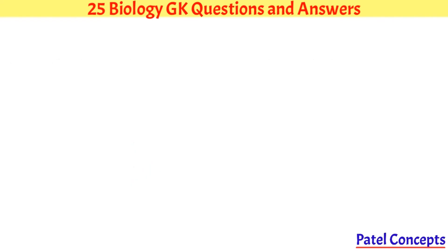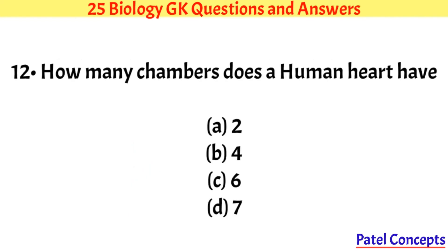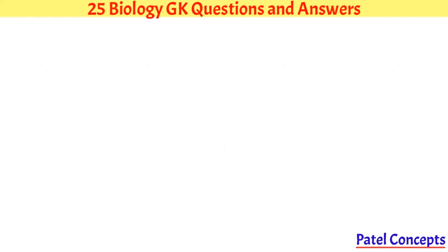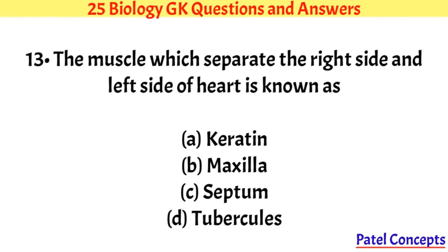Which one is found in a pair in each chromosome? Chromatids. How many chambers does a human heart have? Four. The muscle which separates the right side and left side of the heart is known as the septum.